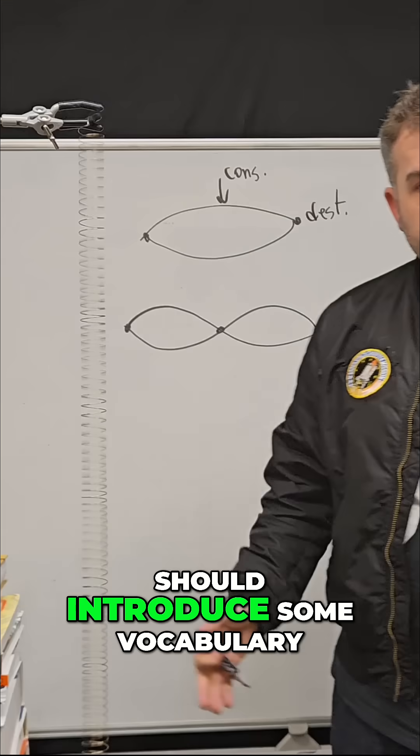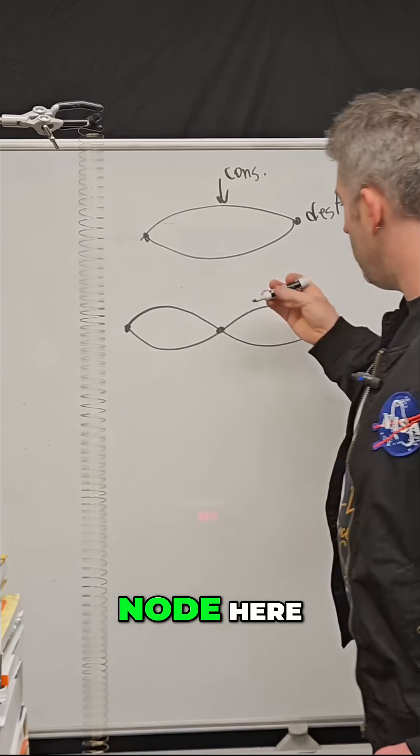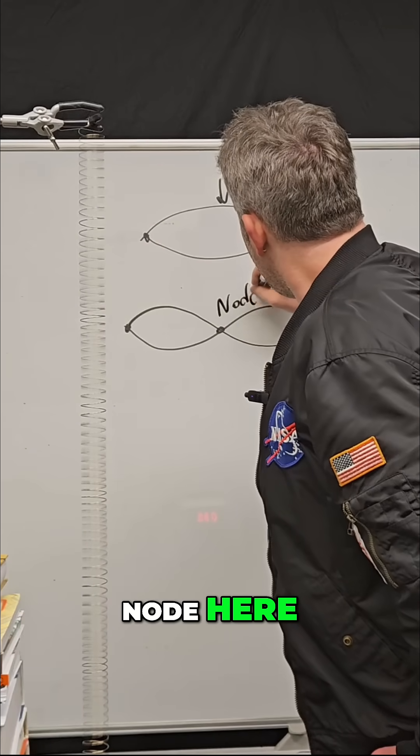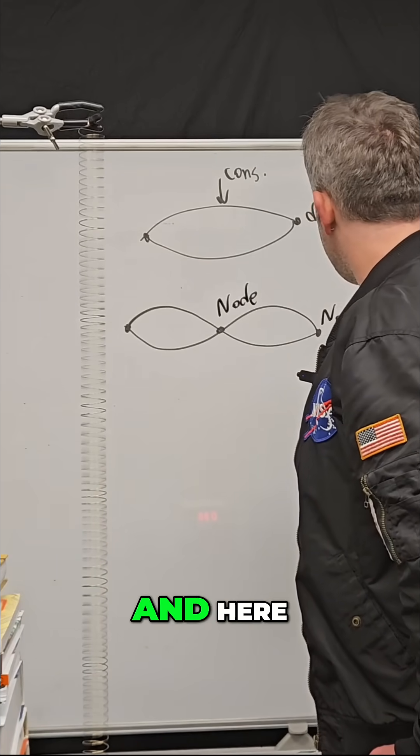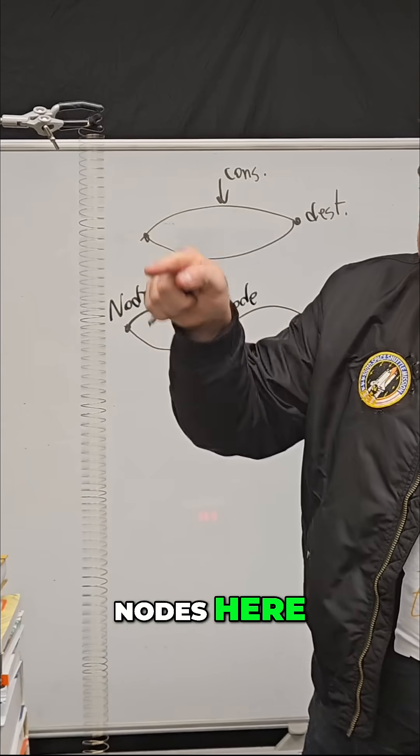I think I should introduce some vocabulary. So these destructive interference points, these are called nodes. So you have a node here, here, and here, and those correspond to nodes here, here, and here, right?